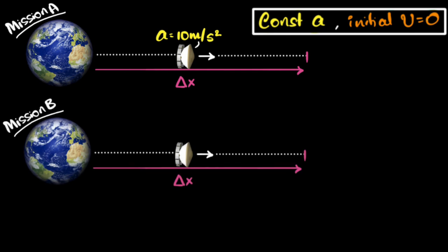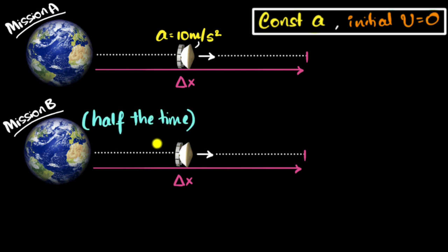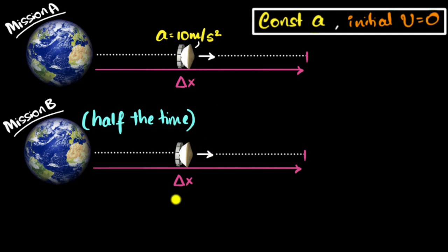Now let's create a second plan, mission B. Again, it's constant acceleration with initial velocity zero. It's going to travel the same delta X, but in half the time. Our goal is to compare some mission parameters. The first thing we can compare is the average velocity. If we want to go the same distance in half the time, clearly the average velocity would be higher — but how much higher? We want to compare that using a mathematical model.